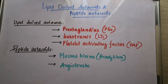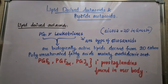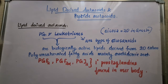Today we are going to deal with lipid-derived autacoids and peptide autacoids. Lipid-derived autacoids include prostaglandins, leukotrienes, and platelet activating factor, whereas peptide autacoids are plasma kinins — that is, bradykinin — and angiotensin. Prostaglandins and leukotrienes are biologically active lipids derived from 20-carbon polyunsaturated fatty acids, mainly arachidonic acid. Because the word 'icosa' is Greek for 20, prostaglandins and leukotrienes are types of icosanoids.